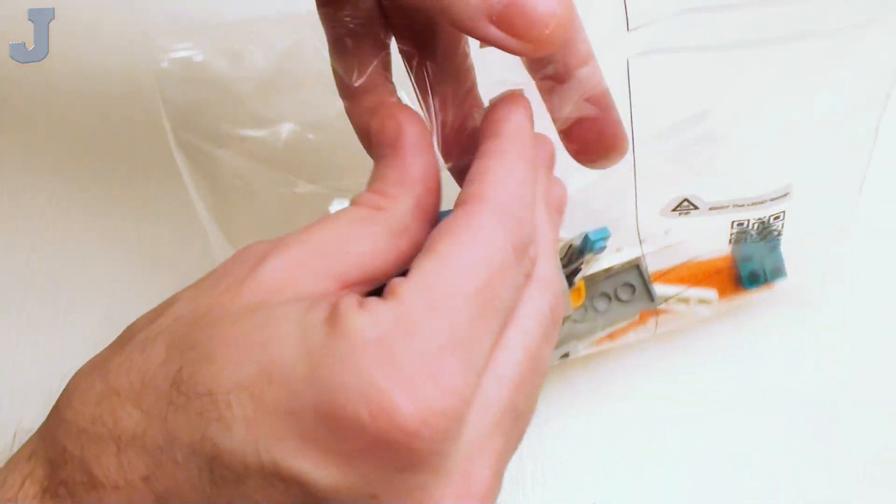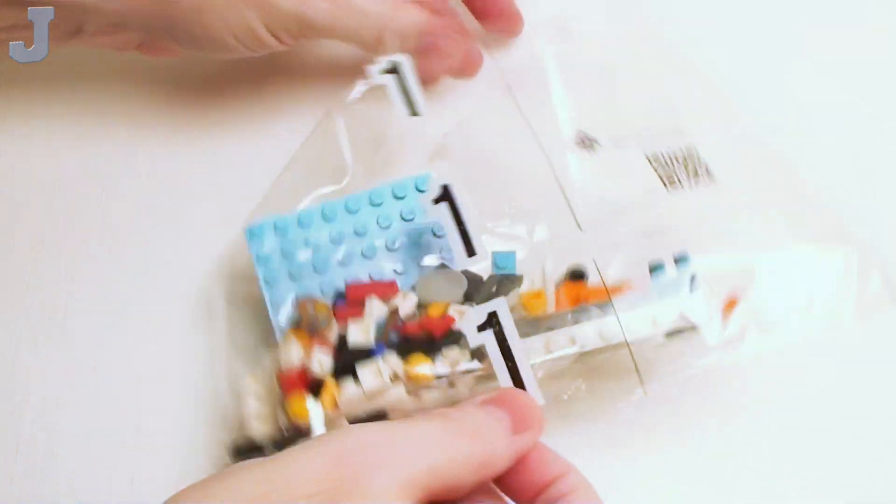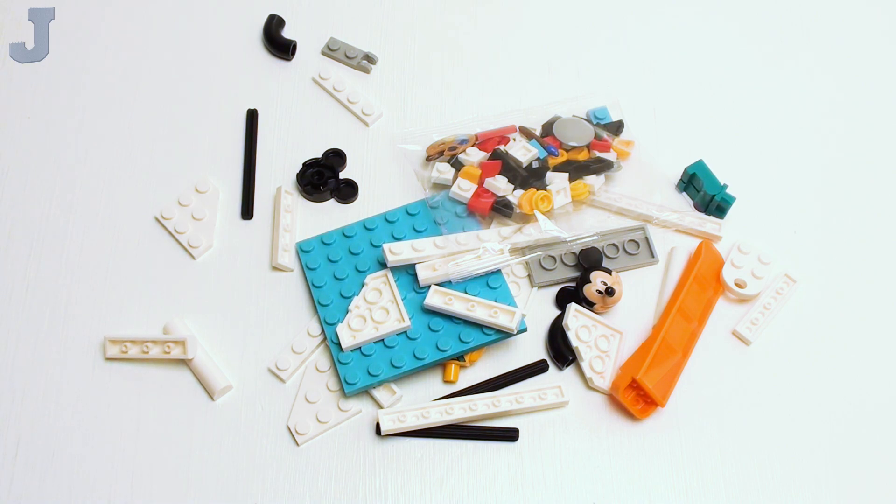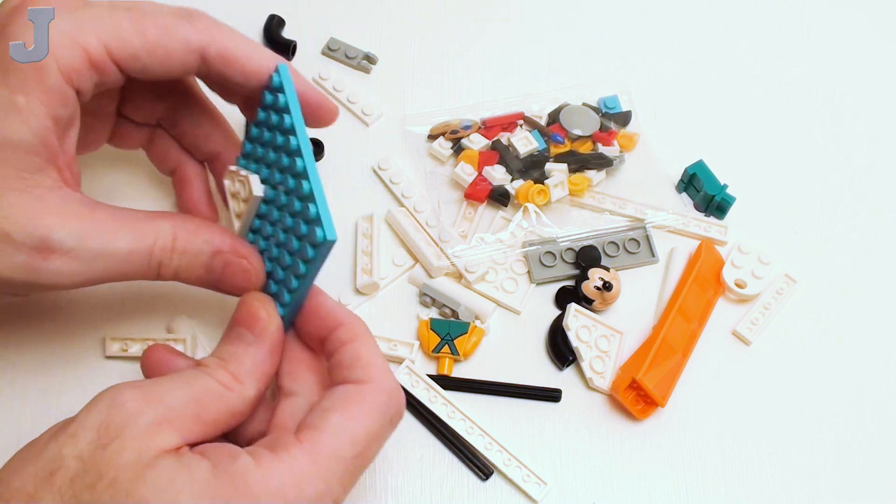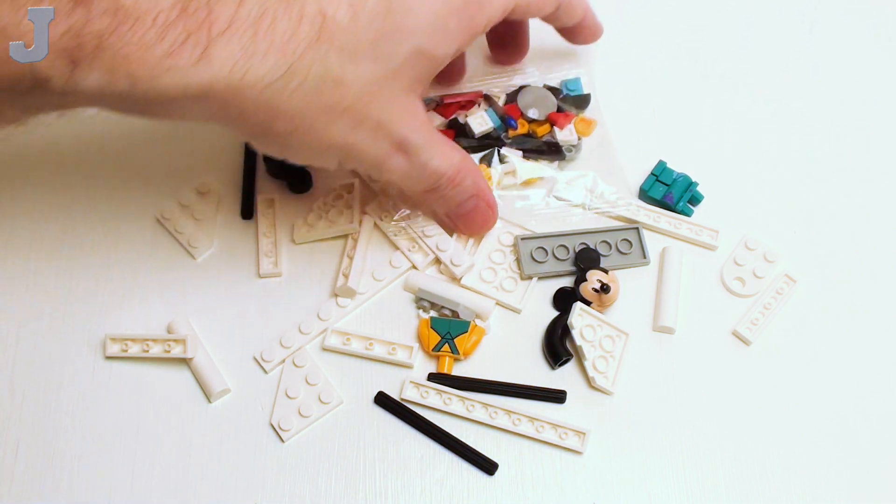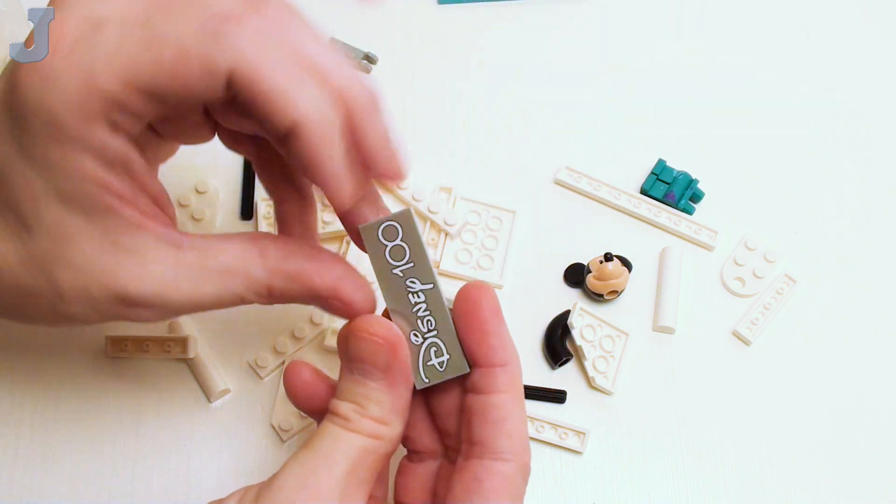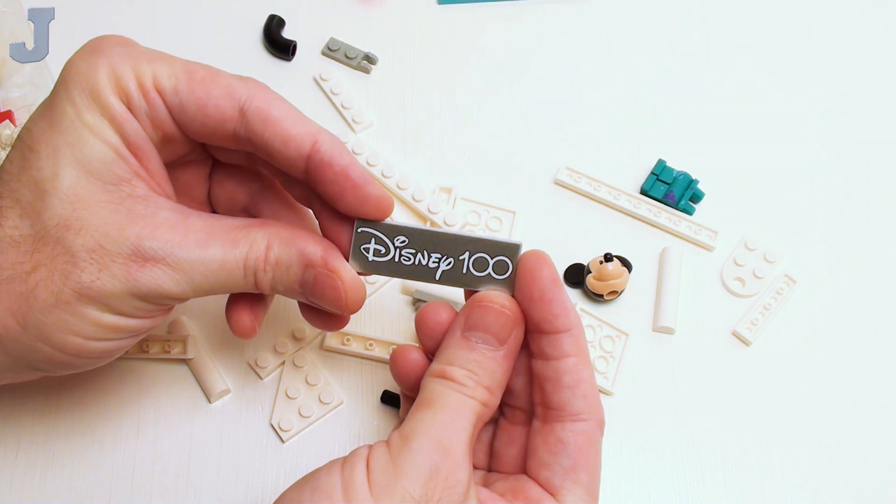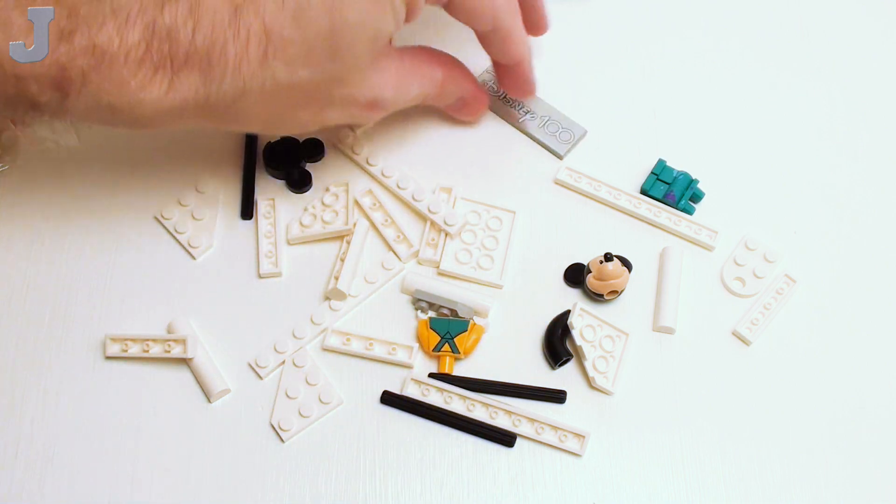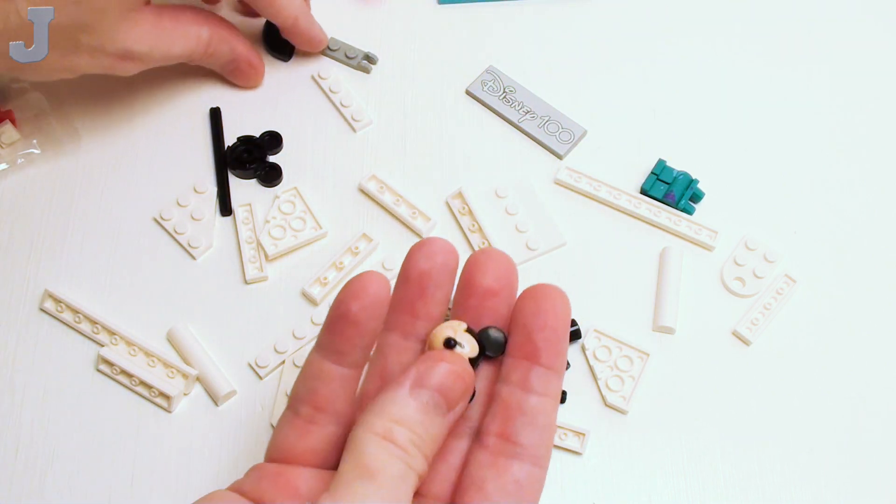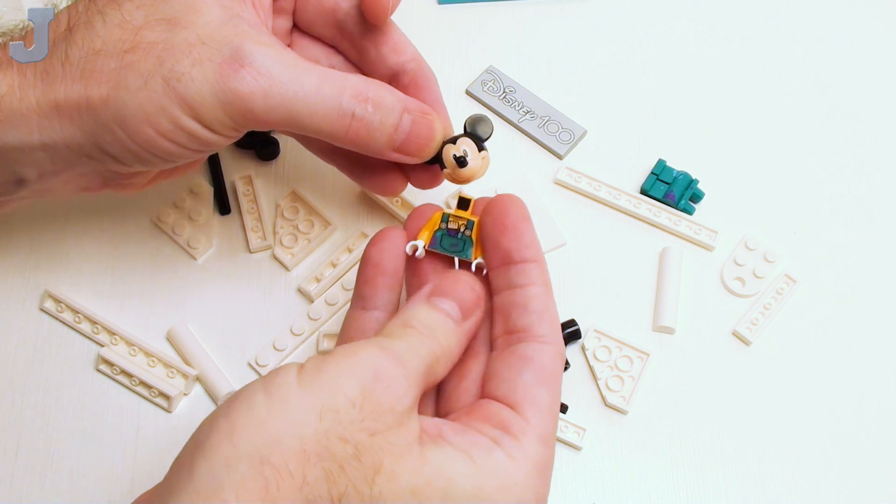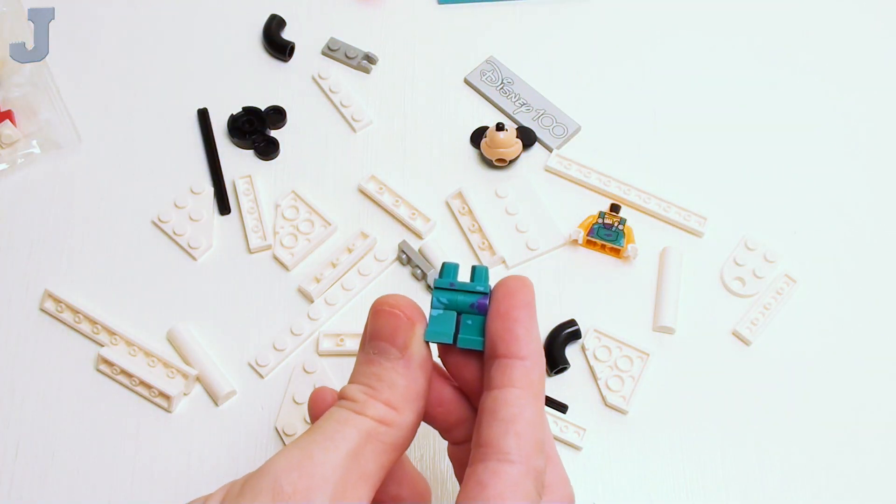Let's have a look at the contents in bag one. I would expect that we get a brick separator with this set. Now I kind of want to see exactly what $59.99 gets us here. And of course we get a bunch of these 8x8 plates. You need this because I have a feeling you're going to be taking this apart to make all the little figures and stuff. And oh, that's nice. Nice and shiny too. Just a Disney 100. And a minifigure stand. And we got Mickey Mouse.